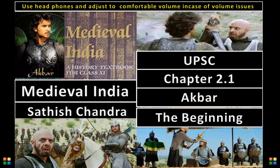Hi guys, this is Vaish from Vaishaiyes and we are going to continue our Satish Chandra series. We have done the first chapter in detail — in three parts we did it — covering Babur, Humayun, and Sher Shah. The timeline is now around 1555, and this textbook is designed in a chronological way, so it will be easy if you watch it in order. This chapter is about Akbar, and it's a lengthy chapter — around 20-25 pages — so I will be doing it again in three or four parts, categorized under different subheadings.